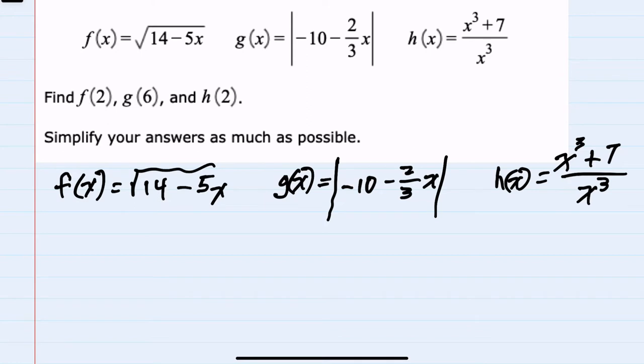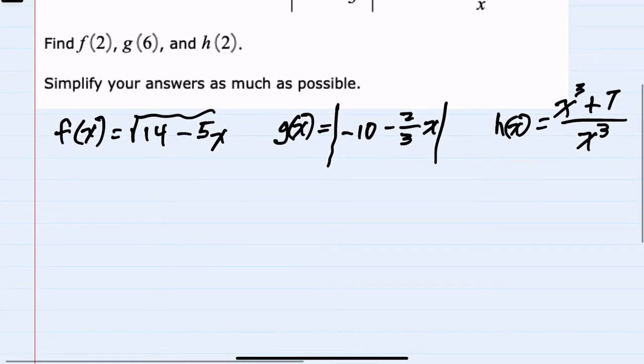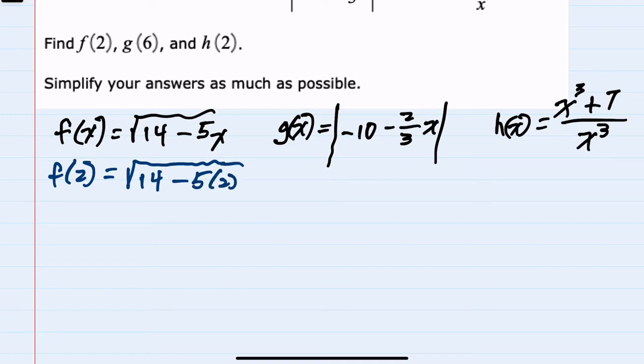First, f of 2 would be replacing x's with 2, so we would have 14 minus 5 times 2. Following the order of operations, we start with multiplication, so this would be 14 minus 10. Working underneath the radical since it's a grouping symbol, 14 minus 10 is 4. Simplifying as much as possible, the square root of 4 is 2. So f of 2 is 2.